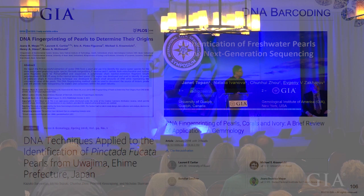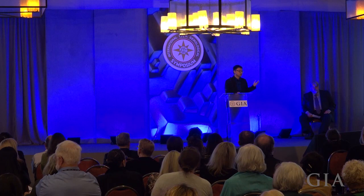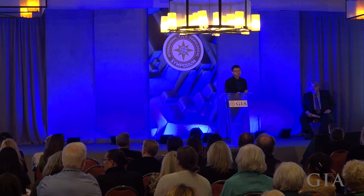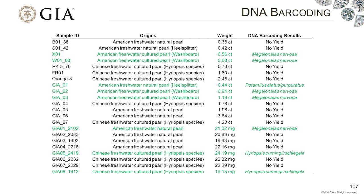In addition to marine samples, we also started on freshwater pearl samples in collaboration with the University of Guelph in Canada. The results were presented last year at a DNA barcoding conference in South Africa. Here you can see 22 freshwater pearl samples sent for DNA analysis. The DNA sequences of eight samples were successfully extracted and identified, and the results fully matched our expectation. For example, Chinese freshwater cultured pearls came out as Hyriopsis species, and American freshwater pearls came out as either washboard or pink heel splitter, which are common American freshwater pearl mussels. So this is very promising.